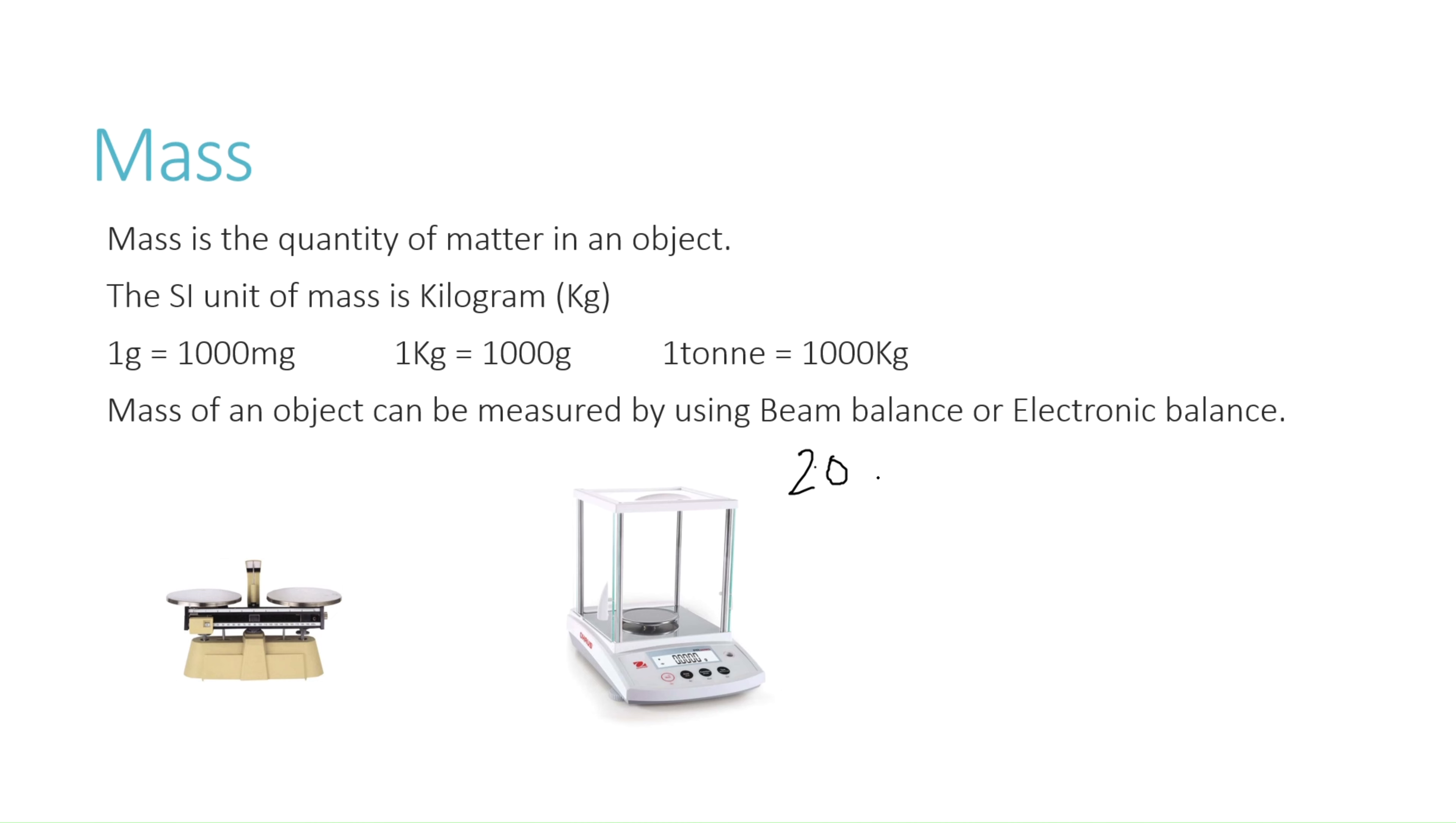If you are asked to convert 20 grams into kilograms, how will you do it? You know that in order to convert gram into kilogram, you must divide with 1000, and for converting kilogram into gram, it has to be multiplied with 1000. So we will divide 20 with 1000, so our answer will be 0.02 kilogram.